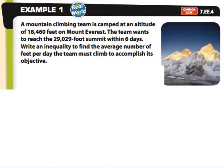In our first problem, we are going to skip that first page in your notes where we're modeling the inequalities, and jump to our first example. In example one, we have a team of mountain climbers camped at an altitude of 18,460 feet on Mount Everest, and they want to reach the 29,029 foot summit within six days. We are going to write an inequality to find the average number of feet per day that the team must climb to accomplish their objective.